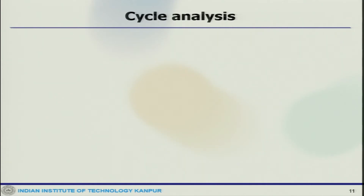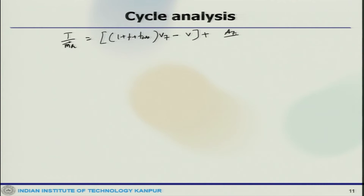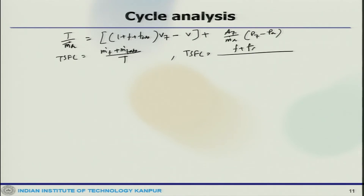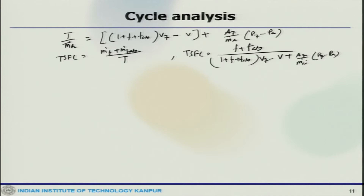We can now see the performance parameters for the single spool engine. Specific thrust is (1 plus A plus F_AB) times V_7 minus V, plus (A_7 by M_dot_A) times (P_7 minus P_A). TSFC would be (M_dot_F plus M_dot_F_AB) by T. If the afterburner is not operative, F_AB goes to zero; otherwise F_AB comes into the picture.